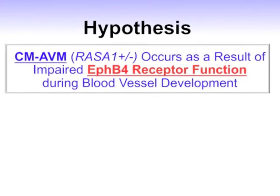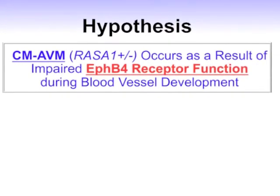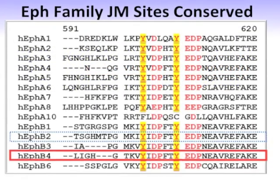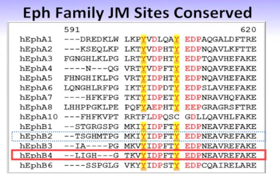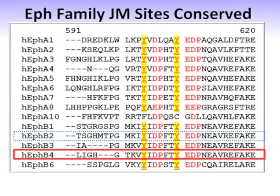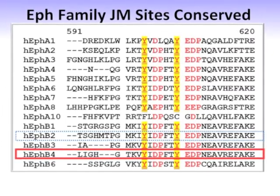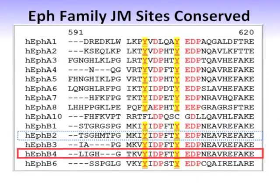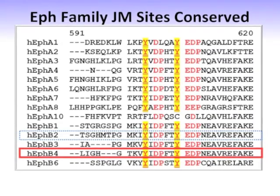Without its partner, the EphB4 receptor cannot signal properly and therefore blood vessels don't form properly. When we look at all these Eph receptors, interestingly, they all line up with tyrosines indicated in yellow in the right places in the juxtamembrane domain. We know that the EphB4 receptor is unique among them because it is required during blood vessel formation, particularly in the segregation of arteries and veins.